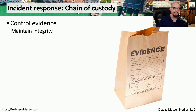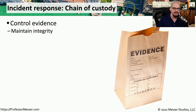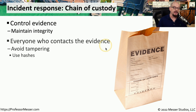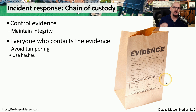When you work in information technology, you may run across an incident where evidence needs to be collected. One way to maintain the integrity of that evidence is to have a chain of custody. This chain of custody documents everyone who comes in contact with the evidence, which helps prevent tampering because we can see exactly who had access.